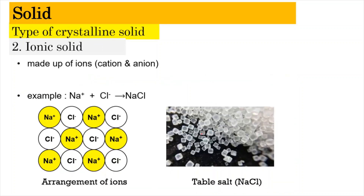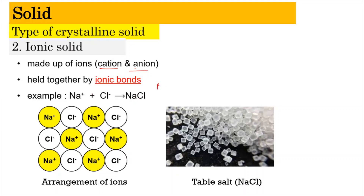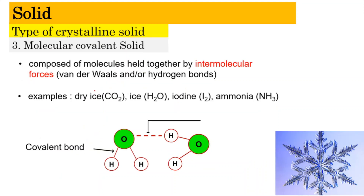Next is the ionic solid, which involves the formation of cations and anions. The example is common salt, NaCl. The cation and anion are held together by electrostatic forces, formed via the transfer of electrons, resulting in an ionic bond.